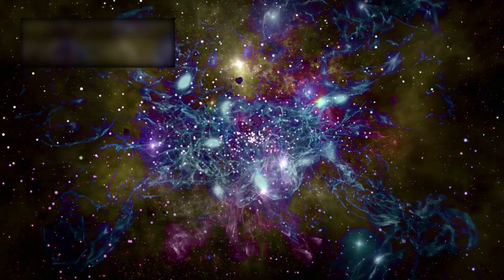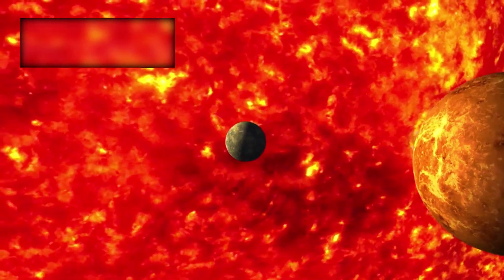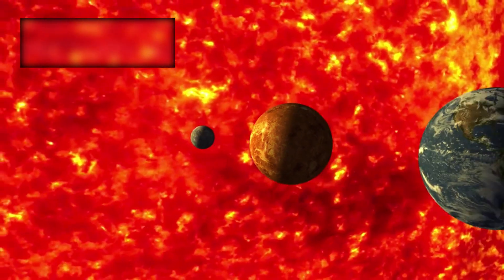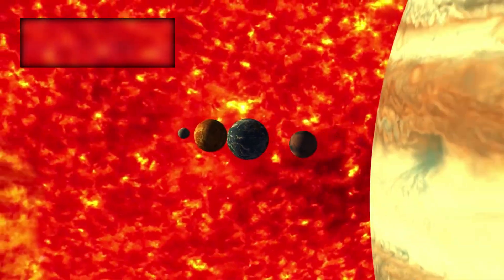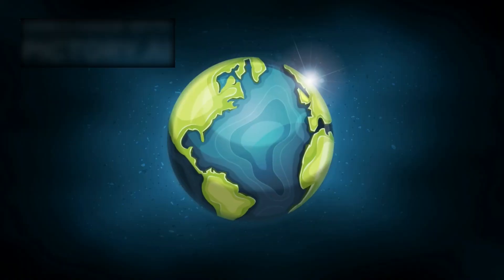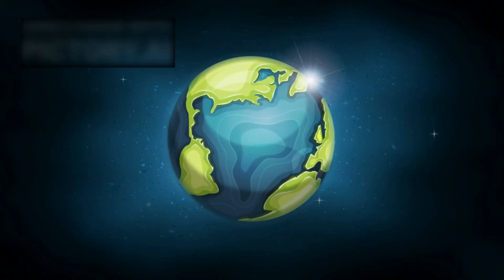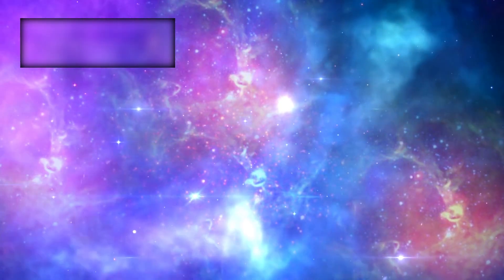To understand just how small we are, imagine shrinking the solar system down to the size of a coin. The Milky Way would then stretch across the size of Earth itself, and beyond it lie trillions of other galaxies, each one an island of suns.